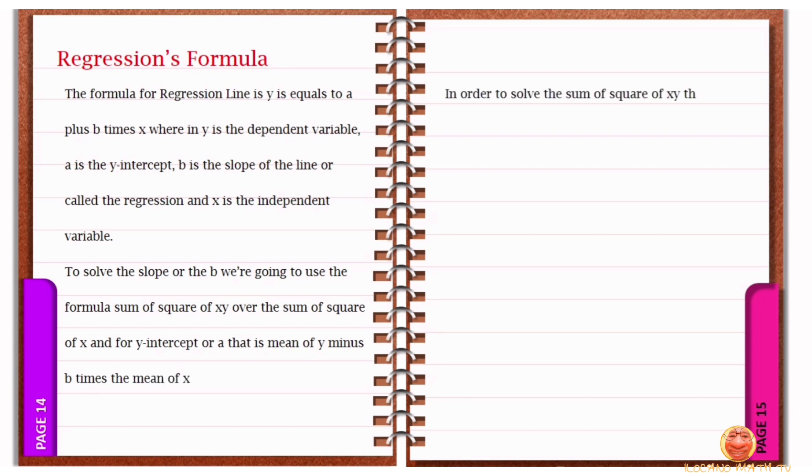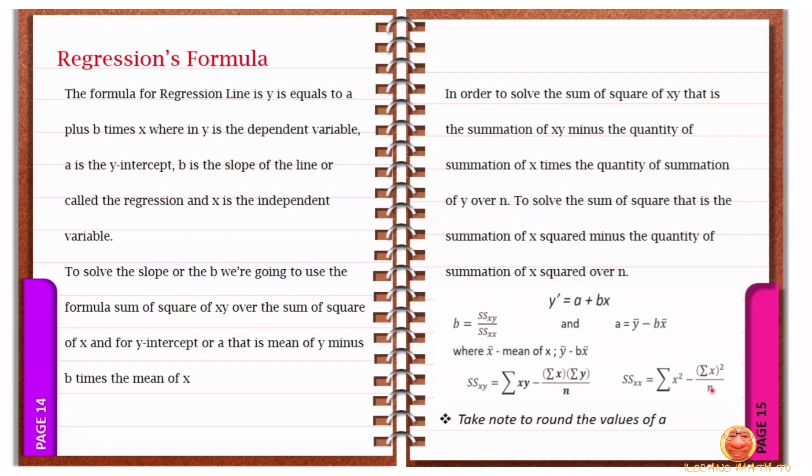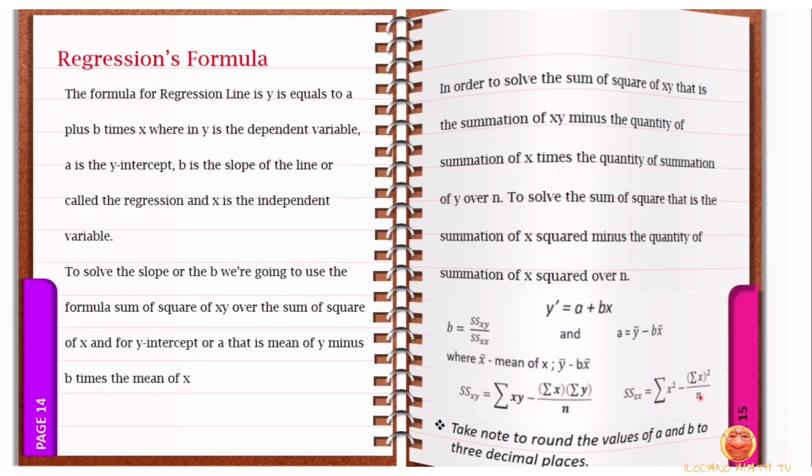In order to solve the sum of square of x,y, that is the summation of x,y minus the quantity of summation of x times the quantity of summation of y over n. To solve the sum of square, that is the summation of x squared minus the quantity of summation of x squared over n. Take note to round the values of A and B to three decimal places.